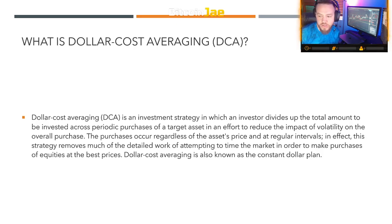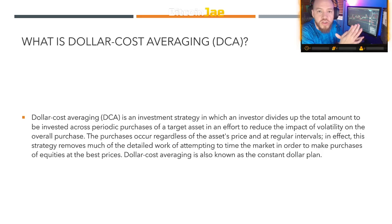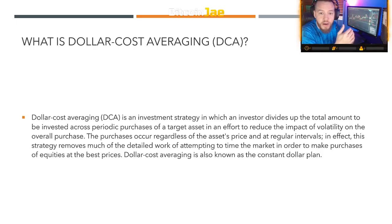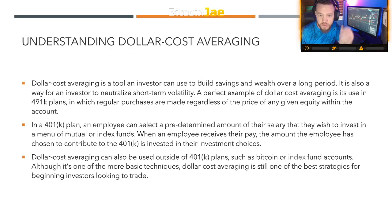Dollar cost averaging is also known as the constant dollar plan. The basic idea is to consistently make deposits or purchases into whatever you're looking to invest in. For Bitcoin, the best time to enter was when it first started in 2009 — the next best time is right now. I always recommend dollar cost averaging rather than putting one lump sum in, because in the end it gives you the best price possible.